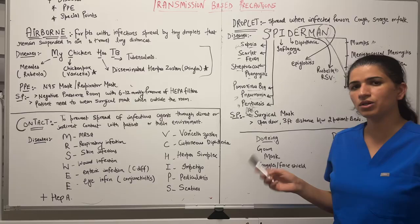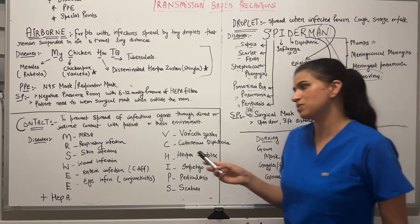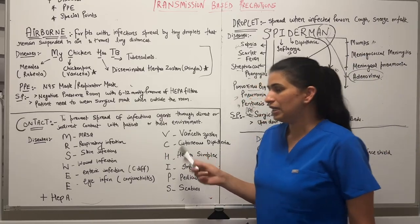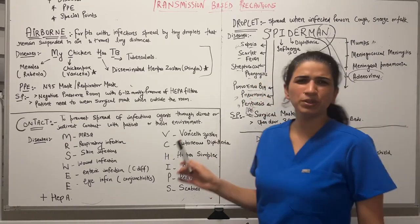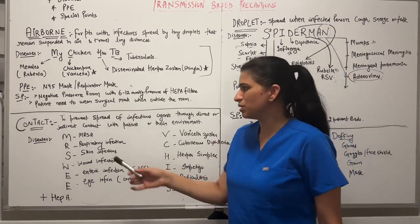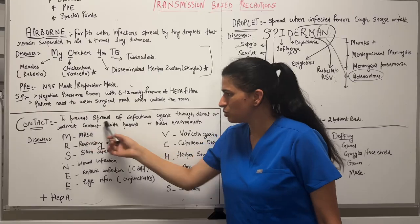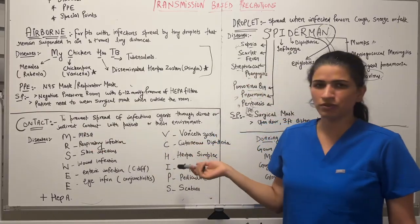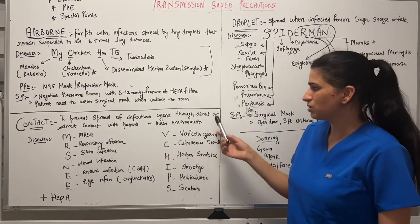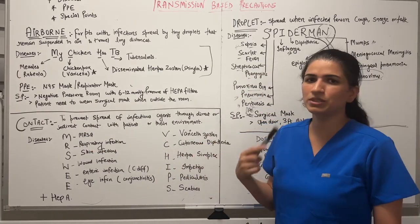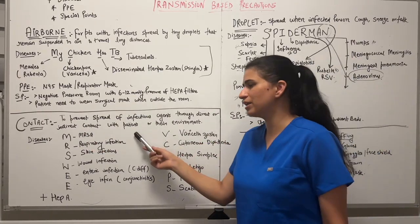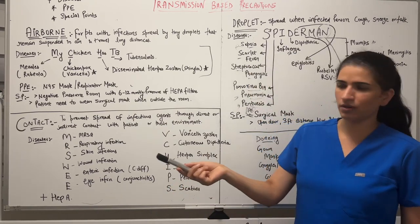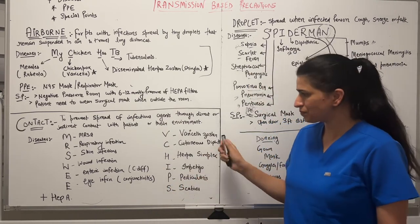Contact precautions are used to prevent the spread of infectious agents through direct or indirect contact with the patient or with the environment.